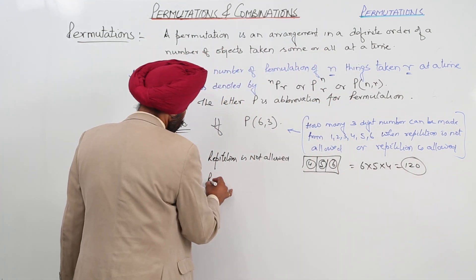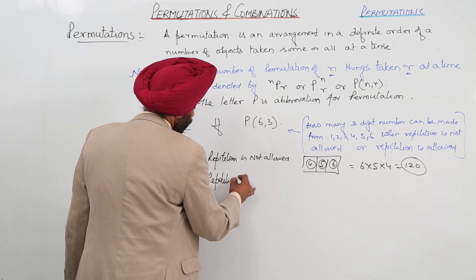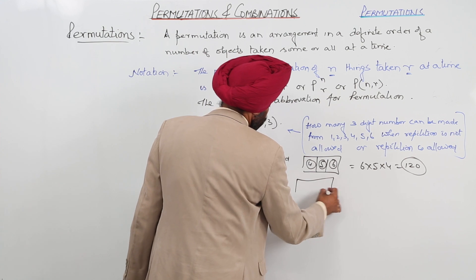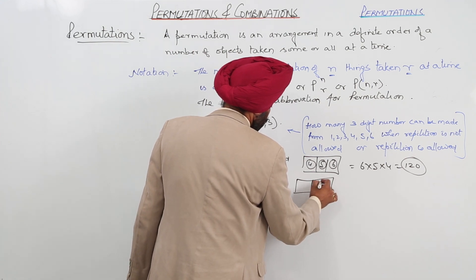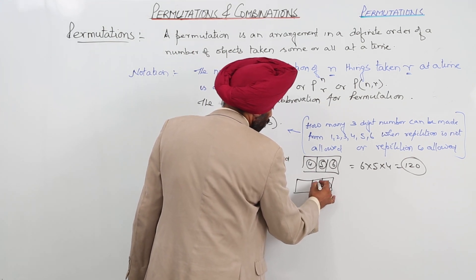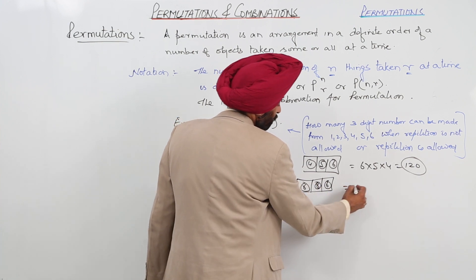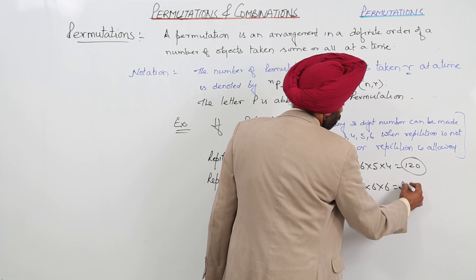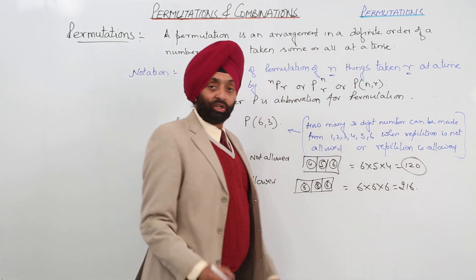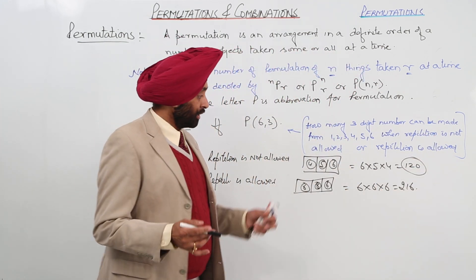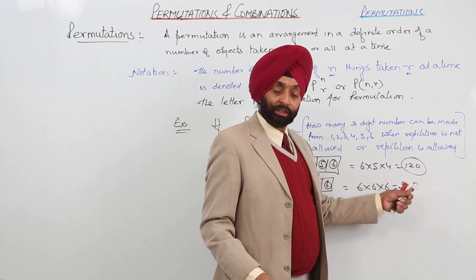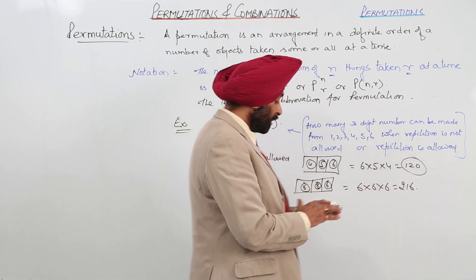When repetition is allowed, then it means all the 6 can be here, all the 6 can be here, all the 6 can be here. This is 6 times 6 times 6, that is 216. So, when repetition is allowed, taking 3 at a time, we got 216 and when it is not allowed, we get 120.